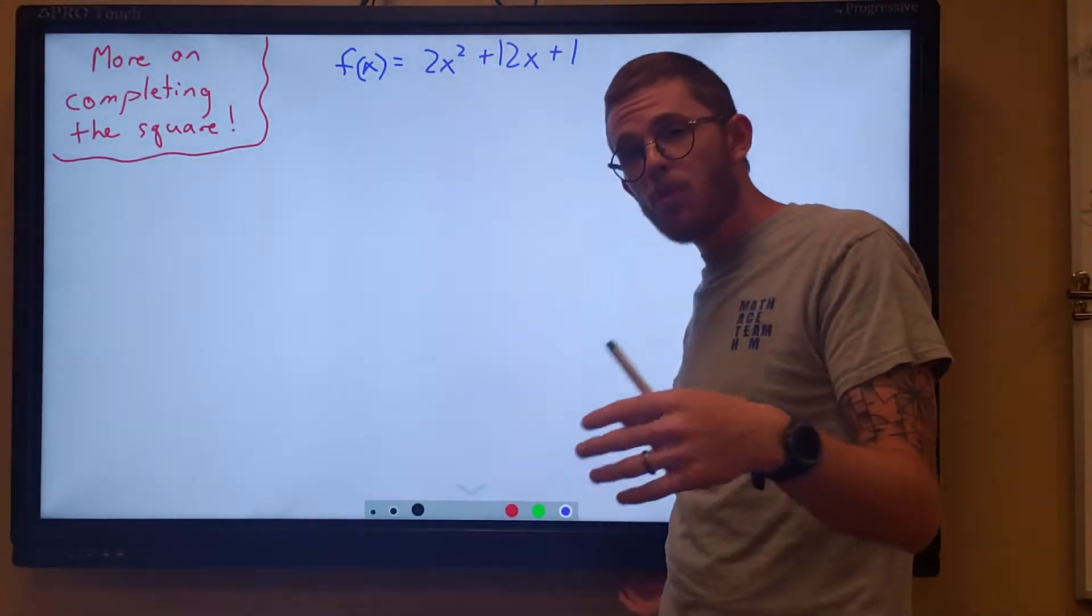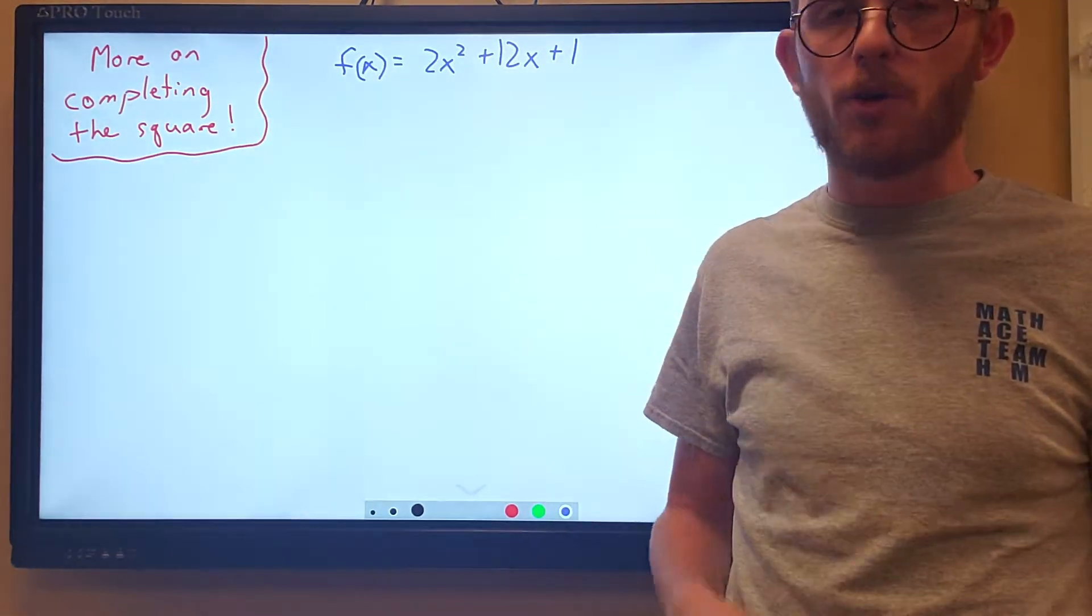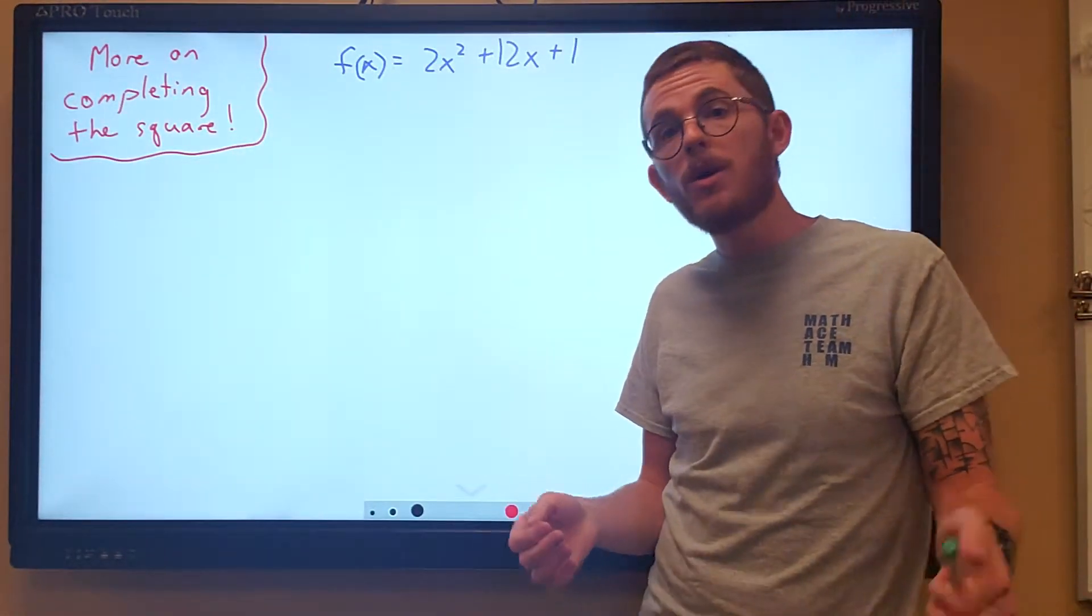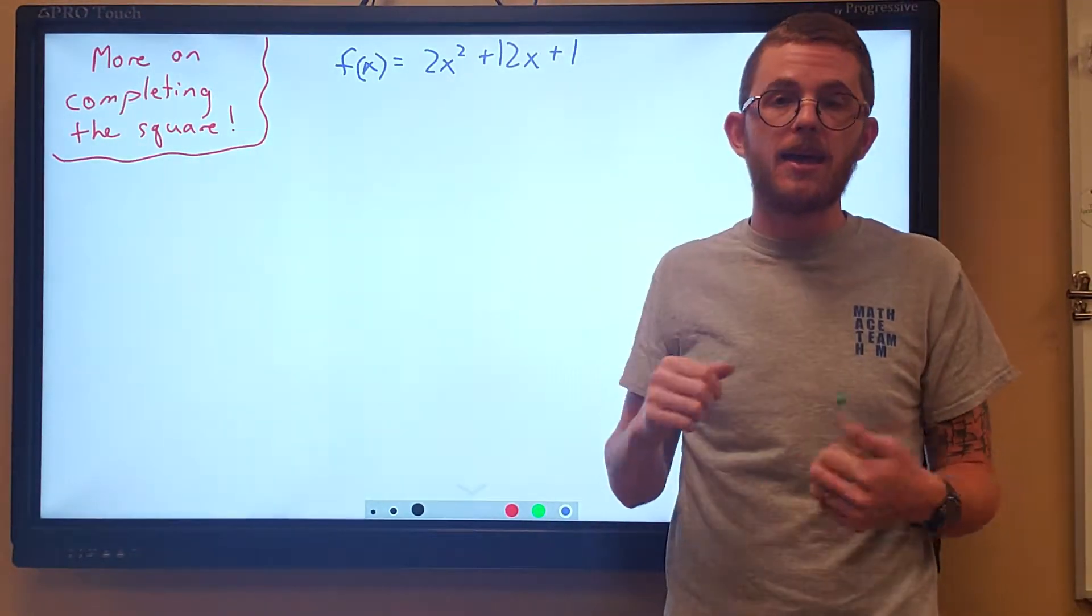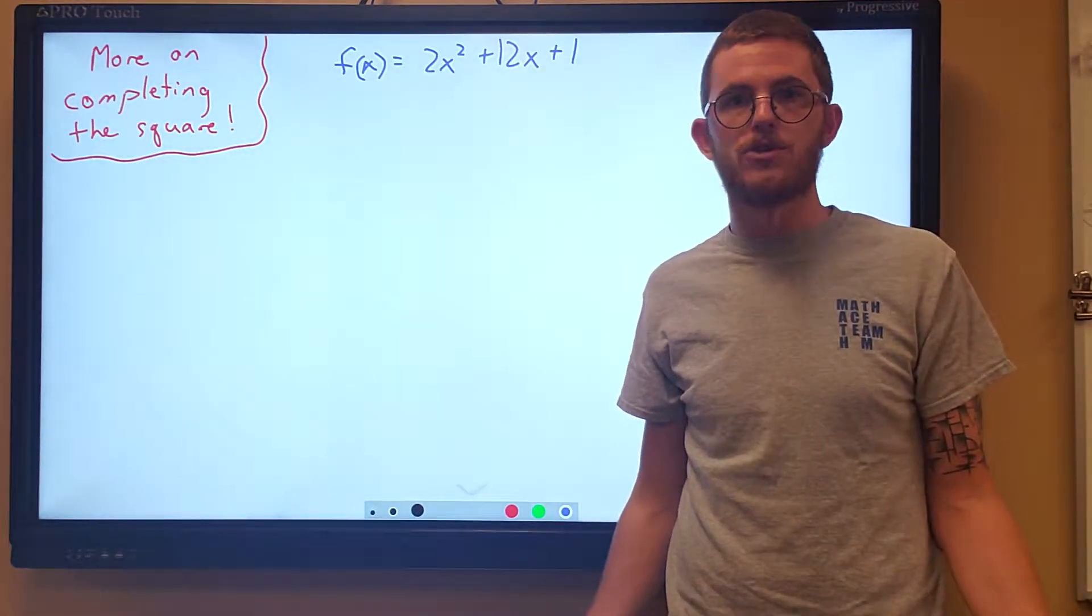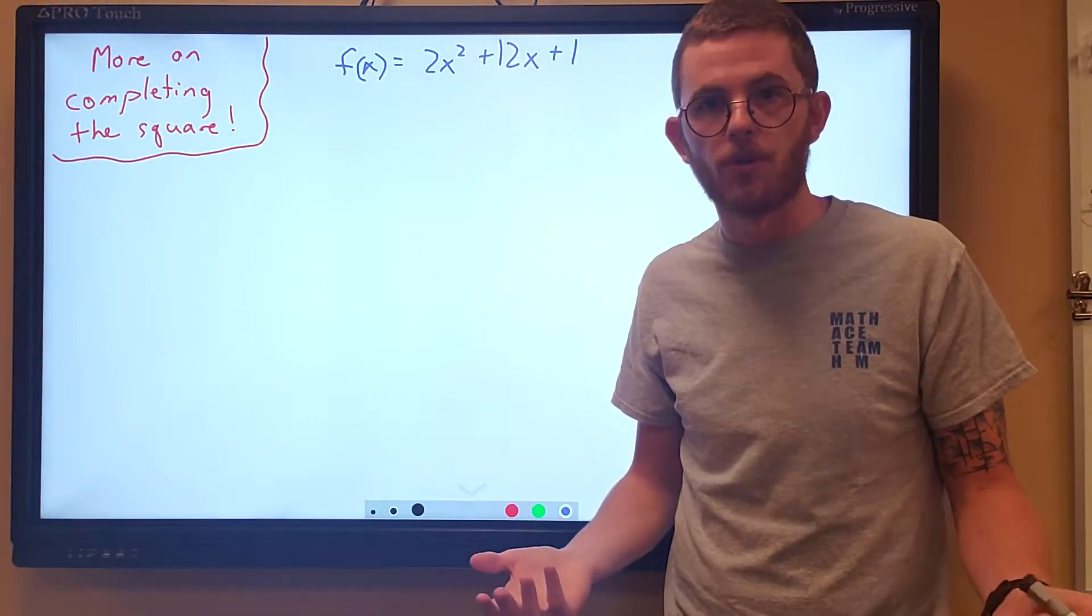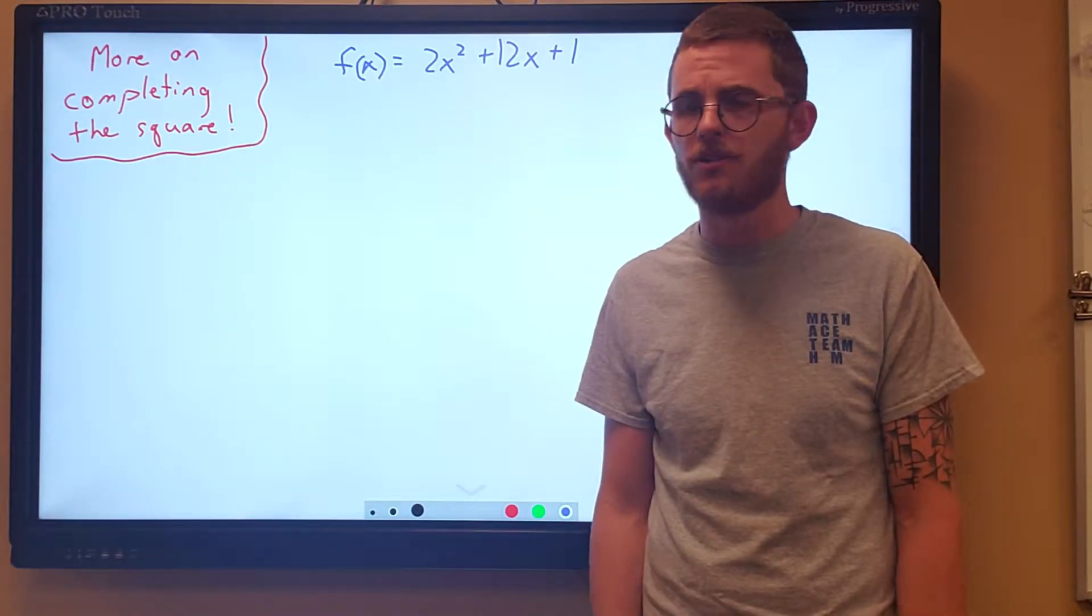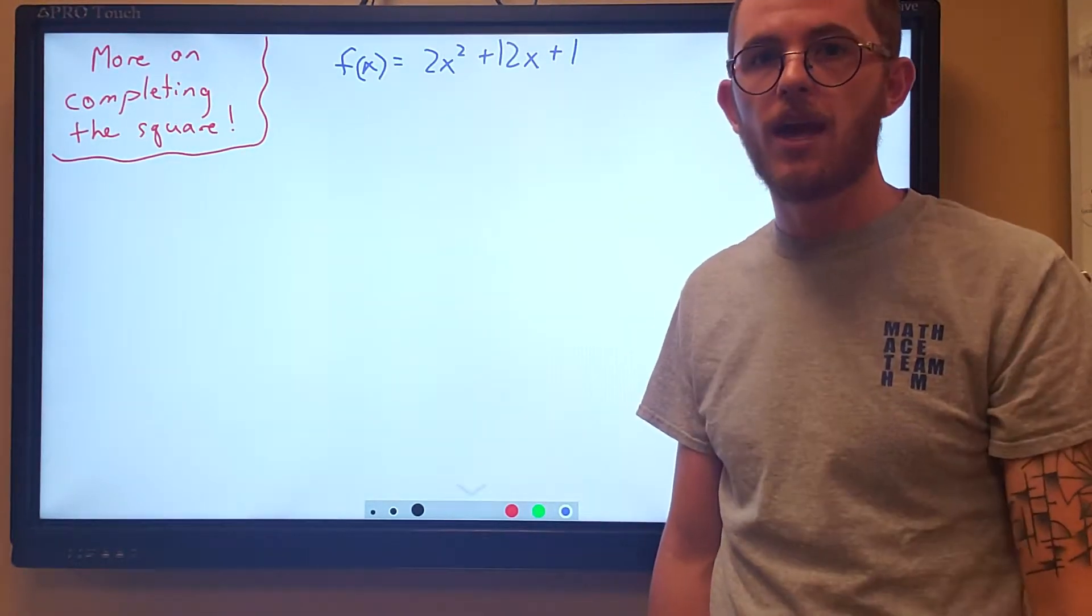And when we looked at the 0.3 lesson and we saw completing the square, we looked specifically when our leading coefficient was a 1. Things are easier when the leading coefficient is a 1. Factoring is easier, completing the square is easier, quadratic formula makes it a little bit easier. Things are just easier. But that's not always going to be the case.